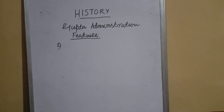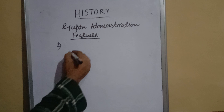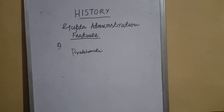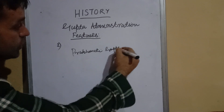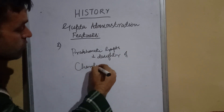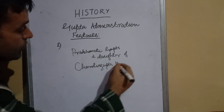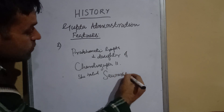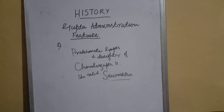We also have evidence of a female heading a province. Prabhavati Gupta was the daughter of Chandragupta II, and she ruled Surashtra, which was in Gujarat. The famous Sudarshan Lake was located there. The importance of the Sudarshan Lake has been asked in examinations many times.